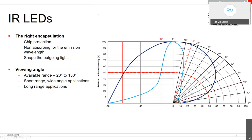Choosing the right beam angle depends on the application. For short-range wide-area detection, a wide viewing angle covers a large area with one LED. For long-range applications like outdoor cameras, you need a very narrow viewing angle to concentrate energy forward, where spreading light in a wide direction would be wasteful.